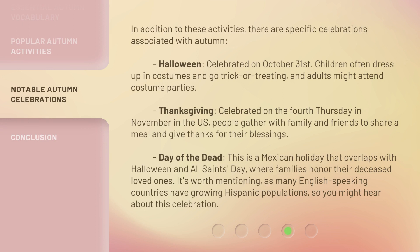In addition to these activities, there are specific celebrations associated with autumn. Halloween, celebrated on October 31st — children often dress up in costumes and go trick-or-treating, and adults might attend costume parties. Thanksgiving, celebrated on the fourth Thursday in November in the U.S. — people gather with family and friends to share a meal and give thanks for their blessings. Day of the Dead — a Mexican holiday that overlaps with Halloween and All Saints Day, where families honor their deceased loved ones. It's worth mentioning, as many English-speaking countries have growing Hispanic populations, so you might hear about this celebration.